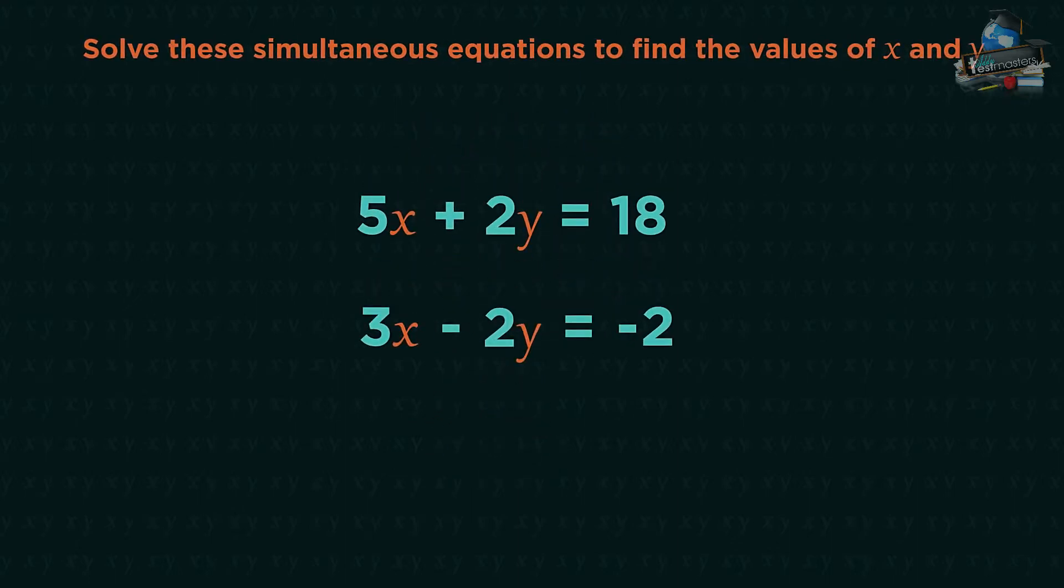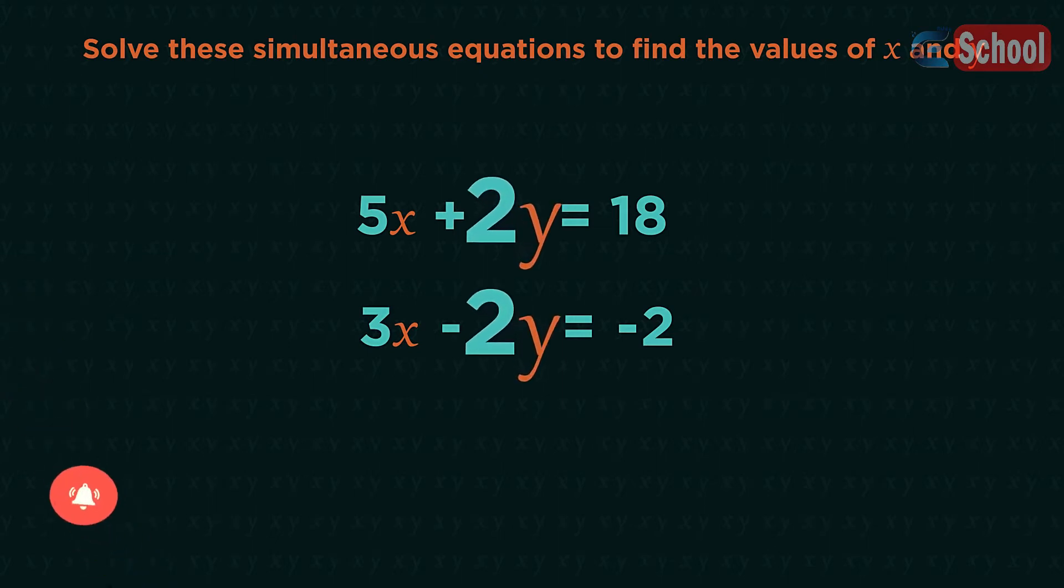Let's get started with an example. We start by lining the two equations up one on top of the other with the x's, the y's, and the numbers all lined up. We now need to eliminate either our x's or our y's, hence the method is called elimination. This means that we need to have an equal number of one of those letters. Luckily for us in this example there are two y's already in both equations so we can eliminate these straight away.